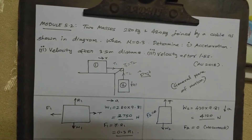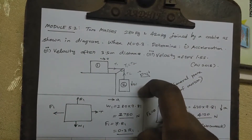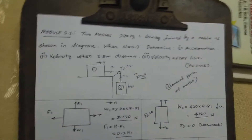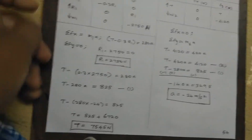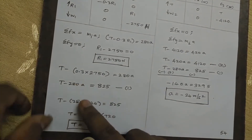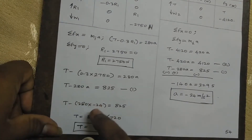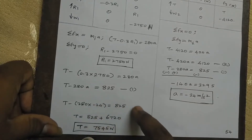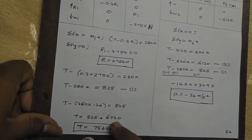The overall diagram confirms the acceleration is minus 24 meters per second squared. To find the value of tension T, substitute into equation one: T minus 280 times minus 24 equals 825. T plus 6720 equals 825 — solving, we get tension T approximately equal to 7545 Newtons.